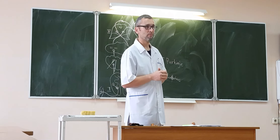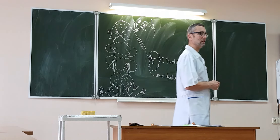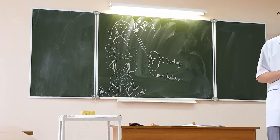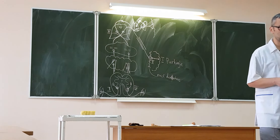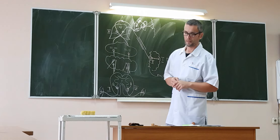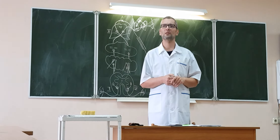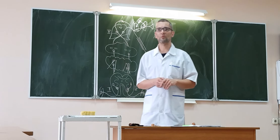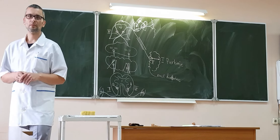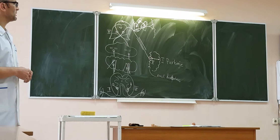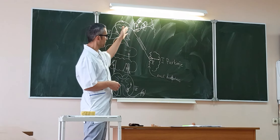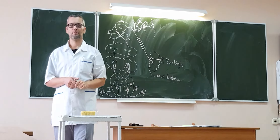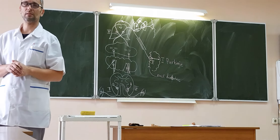Did you understand this? The extrapyramidal system usually causes some difficulties. We need only these two tracts for the extrapyramidal system: the tractus of the extrapyramidal system from the cortex of the brain, and the tractus cerebellorubrospinalis from the cortex of the cerebellum. Just study these two basic tracts of the extrapyramidal system.